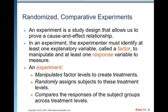Randomized comparative experiments: an experiment is a study designed to allow us to prove a cause and effect relationship. In an experiment, the experimenter must identify at least one explanatory variable, called a factor, to manipulate and at least one response variable to measure. An experiment does three things: it manipulates factors to create treatments, randomly assigns subjects to these treatment levels, and compares the responses of subject groups across treatment levels.